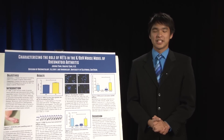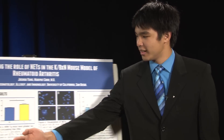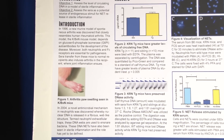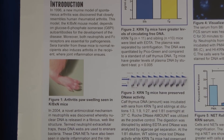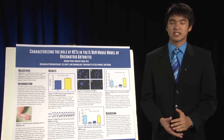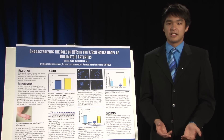In our lab, we used the KBXN mouse model of rheumatoid arthritis. In this mouse model, we cross KRN transgenic mice on the B6 background with NOD mice, and these mice spontaneously develop rheumatoid arthritis-like symptoms. This can be seen in figure one on this KBXN mouse, which has significant paw swelling. This disease is dependent upon both glucose-6-phosphate isomerase, or G6PI, autoantibodies, and neutrophils.